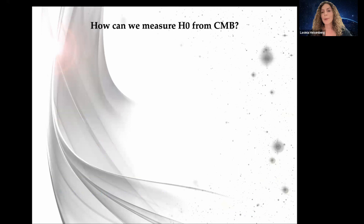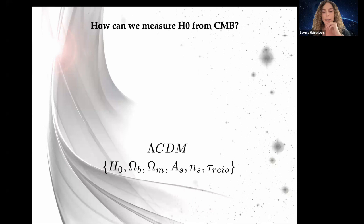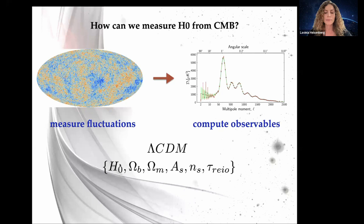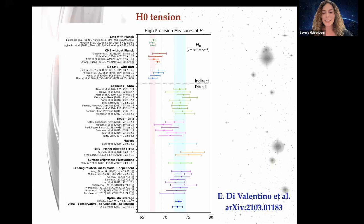To measure H0 from early universe physics — from the CMB — we must assume a specific model like ΛCDM with its parameters, compute the linear cosmological perturbations, compare theoretical predictions of observables to the measured CMB fluctuations, and fit them. In this indirect, model-dependent way we can obtain H0.